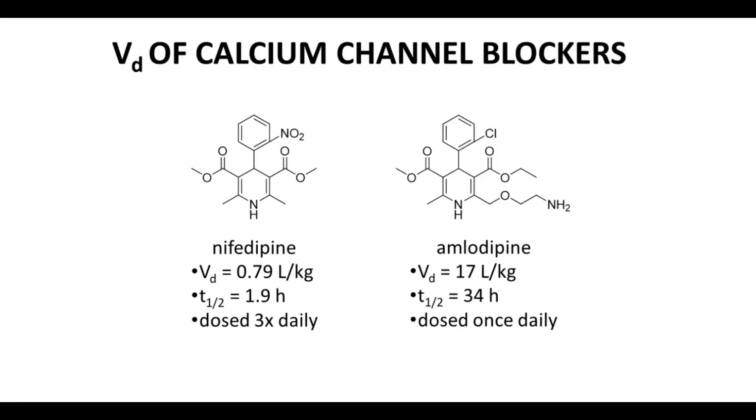Here is an example of adding a charge to a molecule to affect its volume of distribution. We're going to look at calcium channel blockers, and these are blood pressure drugs.